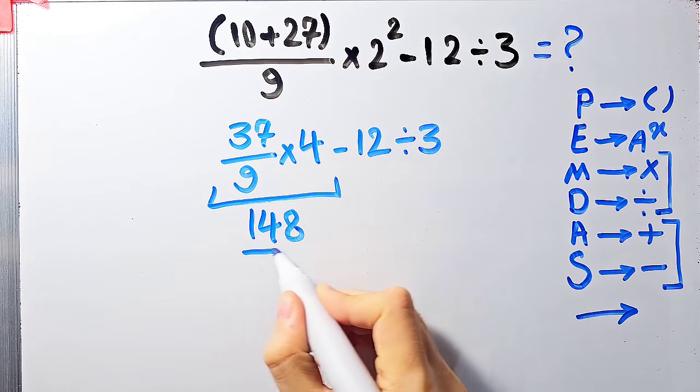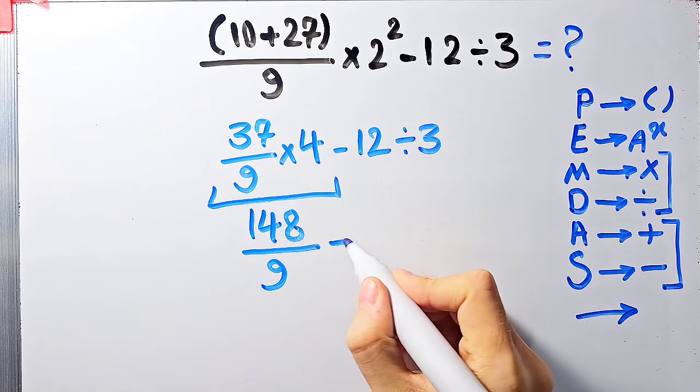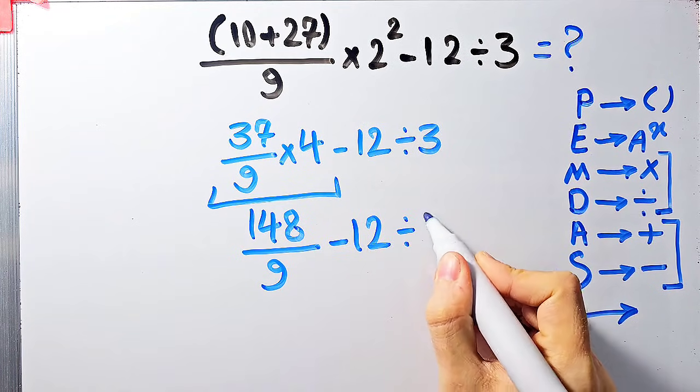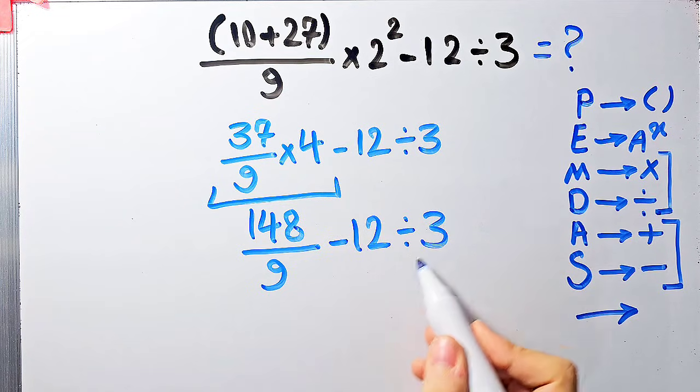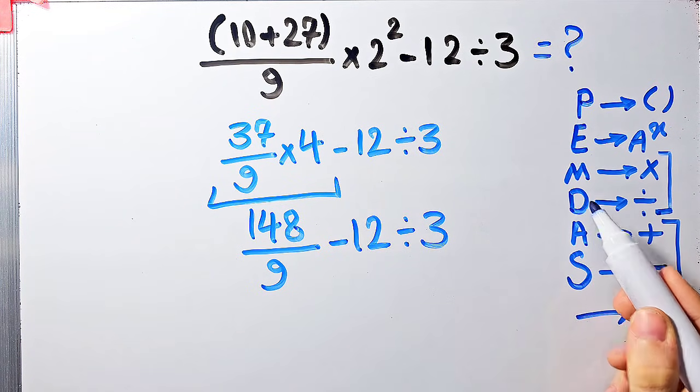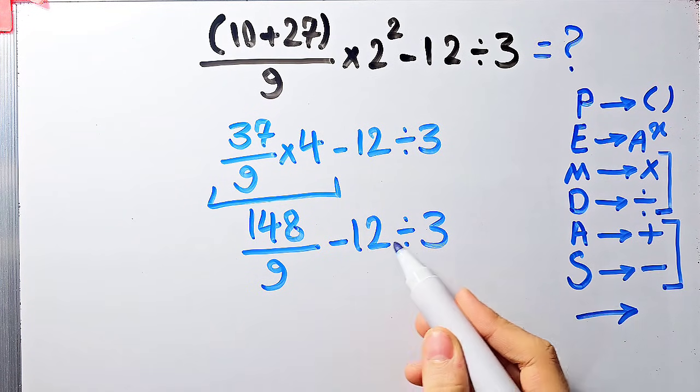Now we have subtraction and division. In this step we simplify the division because division has higher priority than subtraction. Negative 12 divided by 3 equals negative 4.